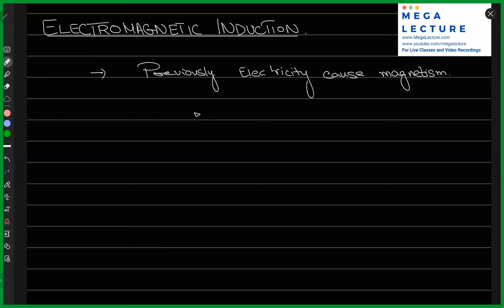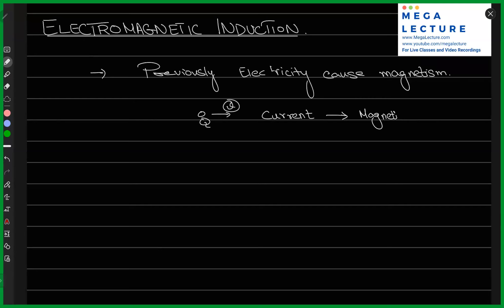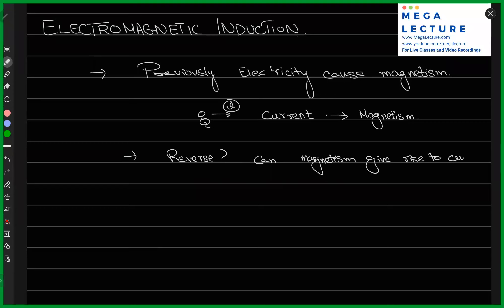If I have a charge moving with some velocity V, and it has charge Q, then if it is moving, it is current — moving charges are current — and current is giving rise to magnetism. What about the inverse of that? Can magnetism give rise to current? And as it turns out, indeed it can, and that is what we call electromagnetic induction.